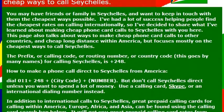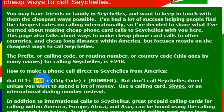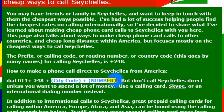That having been said, if you want to reach Seychelles, you can simply do that by making a phone call there if you're planning on going on vacation or visiting friends and family there. You can call them simply by dialing 248 as the country code. So from the United States, you would dial 011, then 248, which is the country code for Seychelles, then the phone number you're trying to reach.